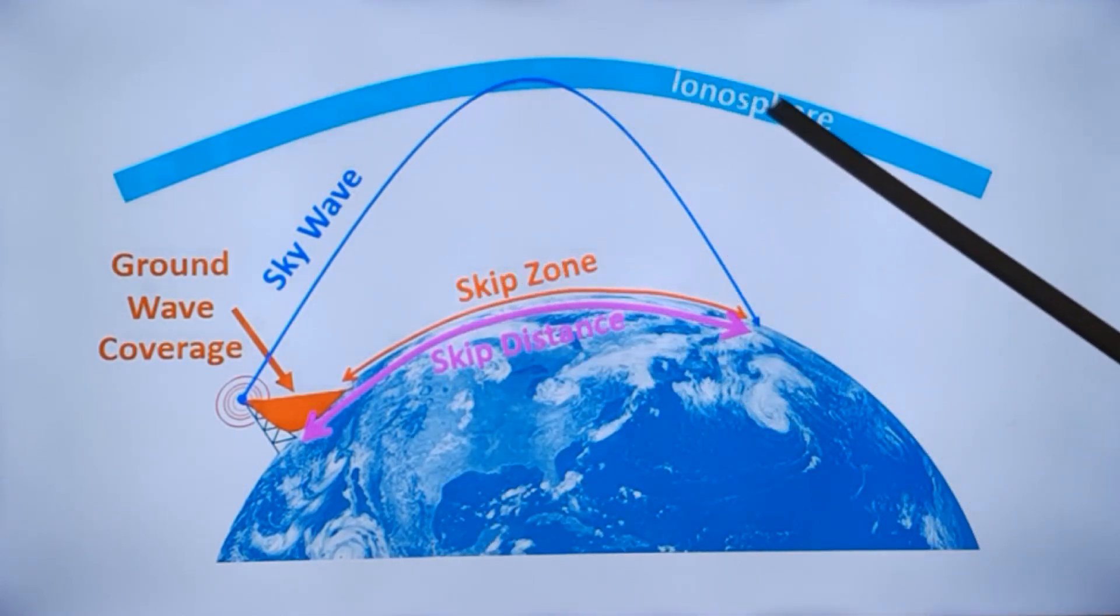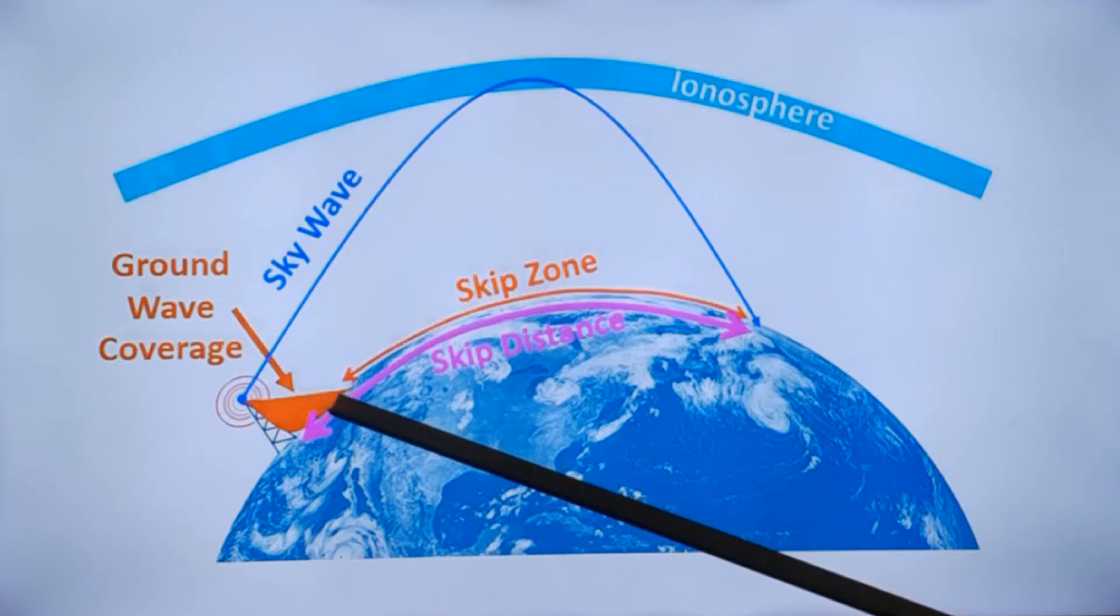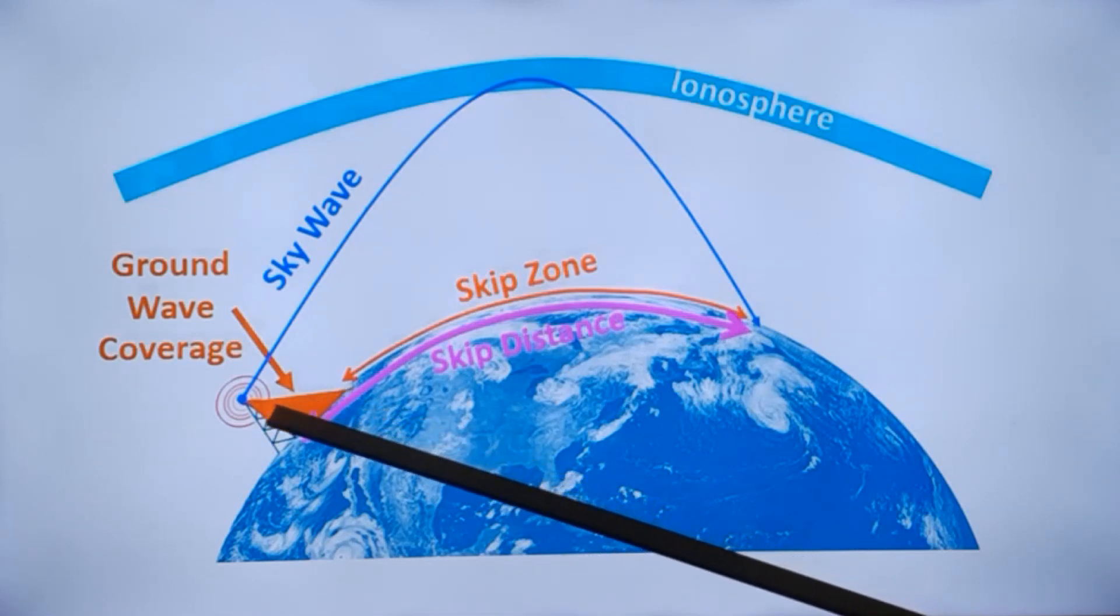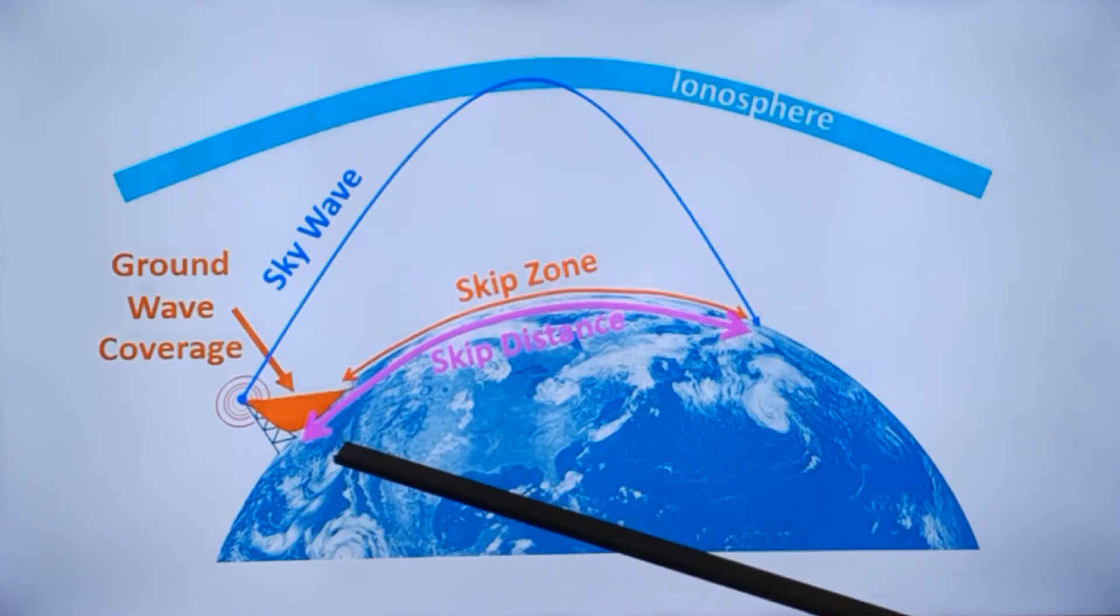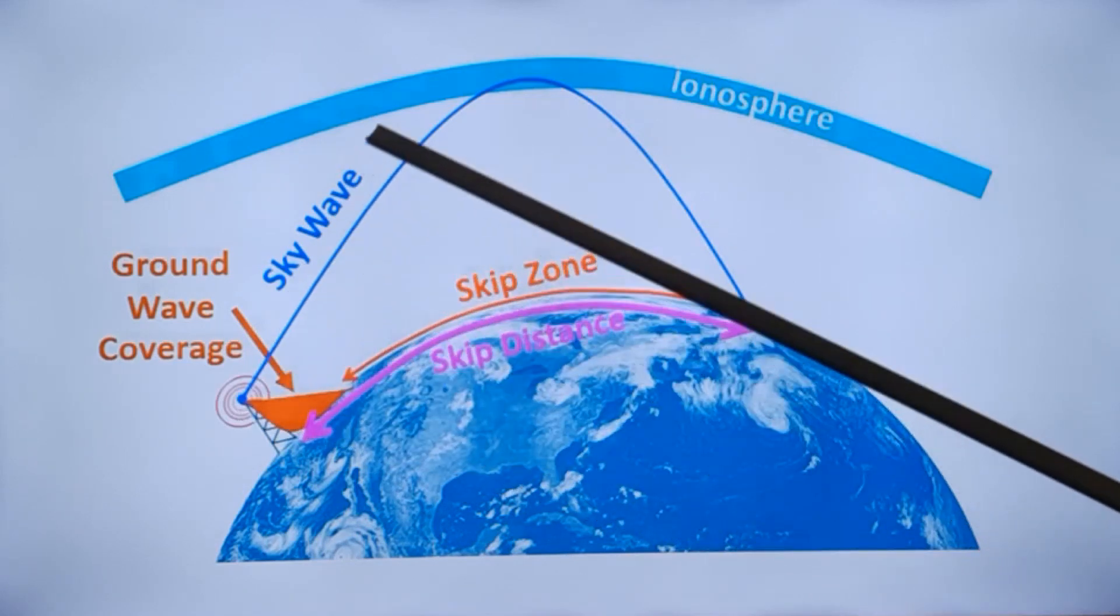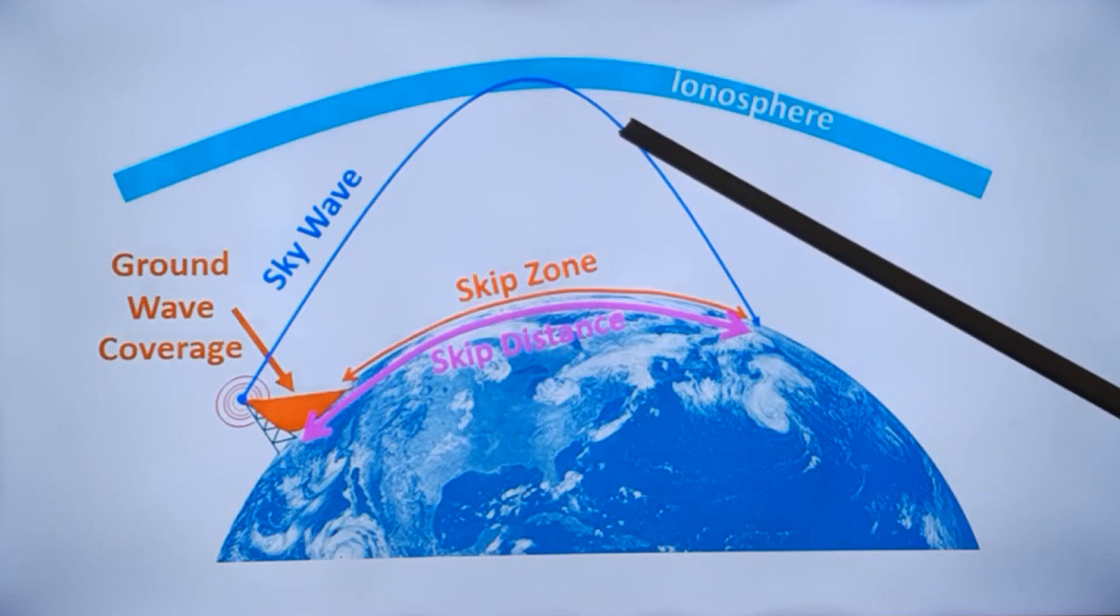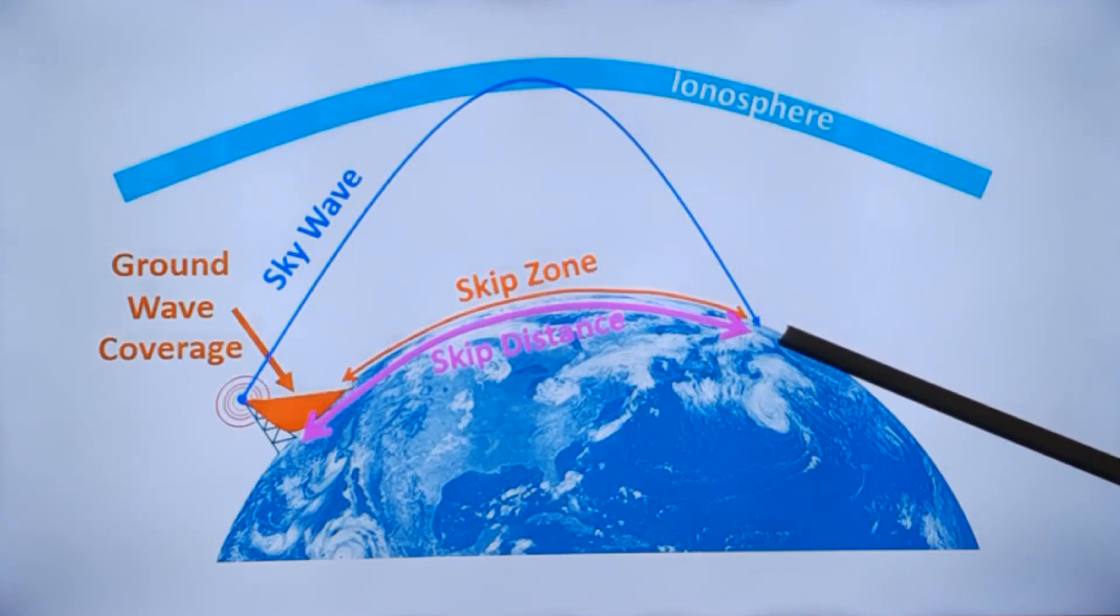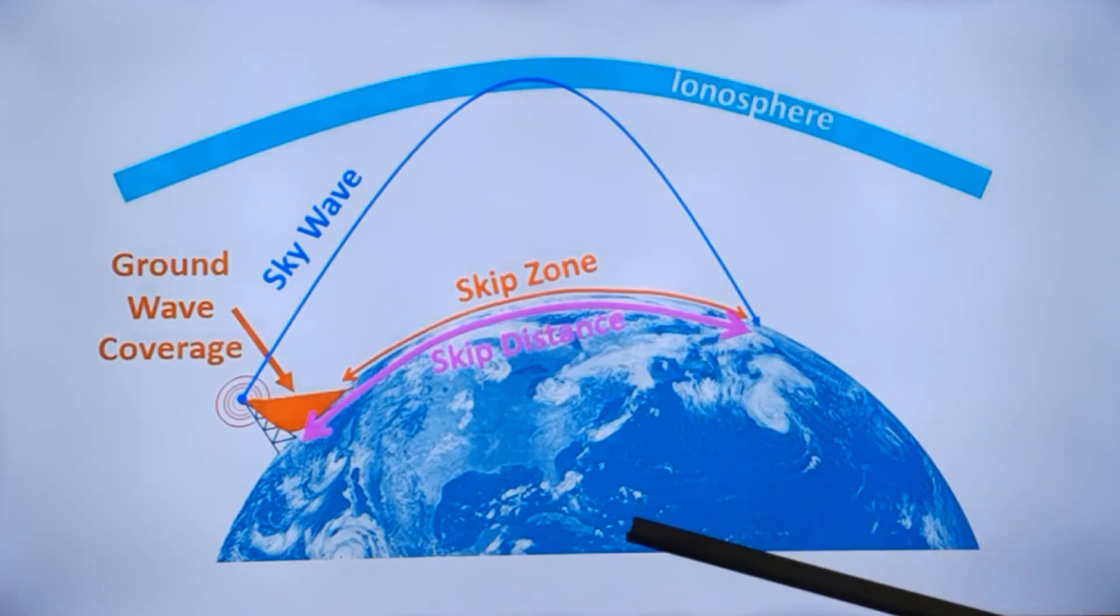This is the representation of the ionosphere and this is the transmission. When there is a transmission, the ground waves cover only a small region. This is more commonly seen for medium wave transmission. And for short waves, when it is going at a critical angle, it will get reflected off the ionosphere and come back to the earth at a distance. This distance is known as skip distance.